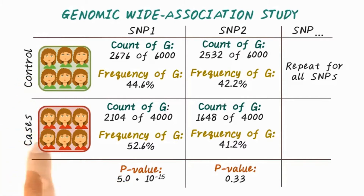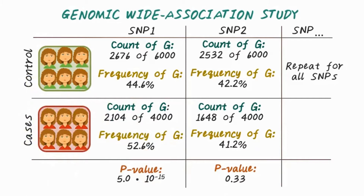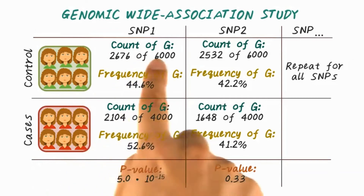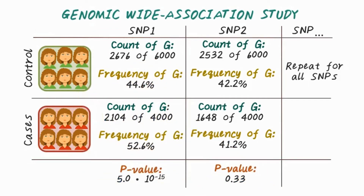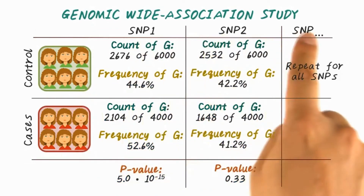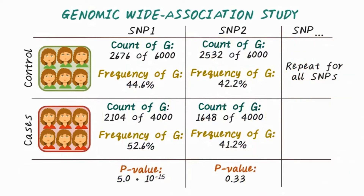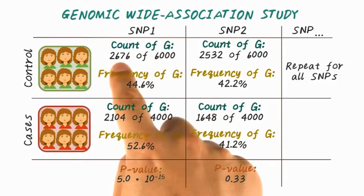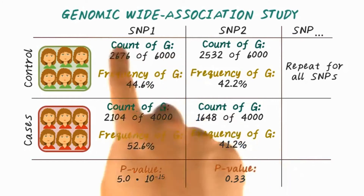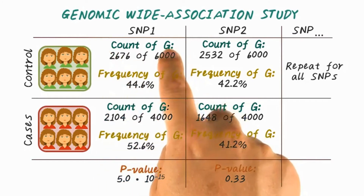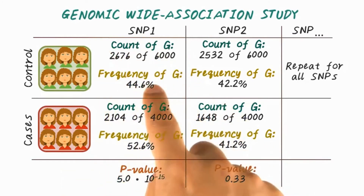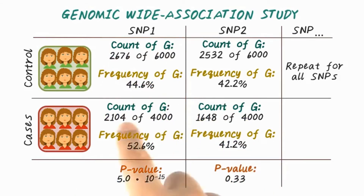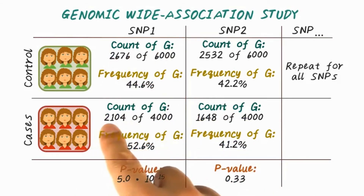Here's an example showing more details on how GWAS is computed. We first identify the cases and controls — that is, the people with the disease phenotype and the people without the disease phenotype. In this case, we have 4,000 patients with the disease phenotype and 6,000 patients without the disease phenotype. Then we iterate over all the SNPs to compare the relevant frequencies. For instance, for SNP 1 in the control group, we have 2,676 out of 6,000 with the corresponding variation G at this location, and the frequency of G is 44.6%.